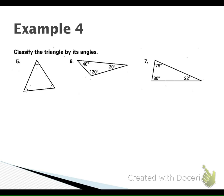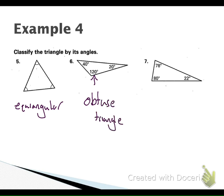The first one has congruent marks telling us we have three congruent angles, so it's equiangular. Our second one is going to be obtuse because you have one angle greater than 90 degrees — it's an obtuse triangle. And then our last one is acute. All angles are less than 90 degrees.